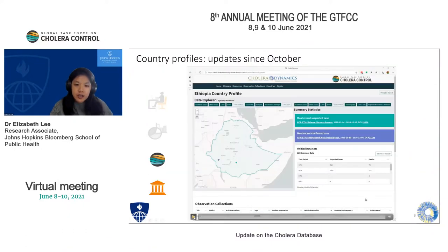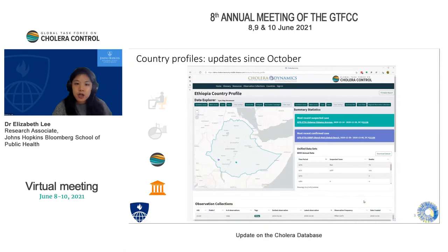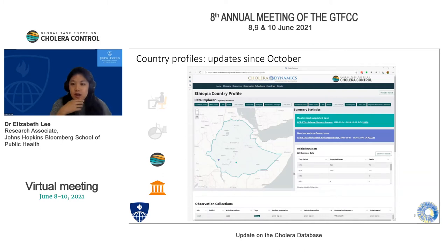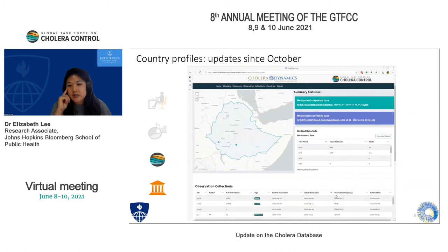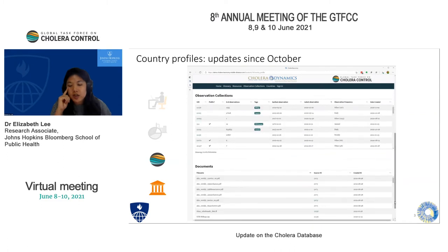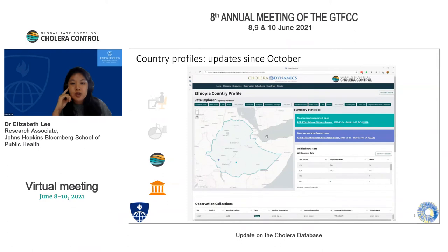Here is a video screen capture of what the current cholera country profiles look like, using Ethiopia as an example. On the left is a primary figure able to display various types of figures, and on the right is a secondary data screen, with buttons along the top to toggle different types of figures. Scrolling down, there is additional information including observation collections — all the different data sources informing the country profile — as well as the underlying source documents.